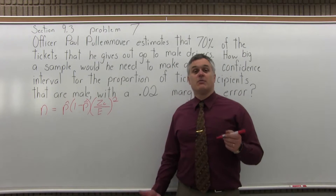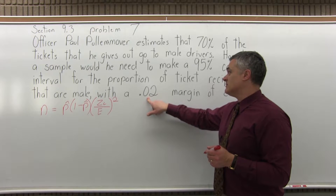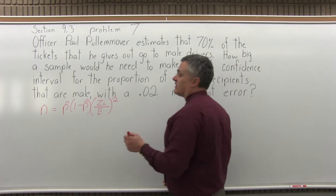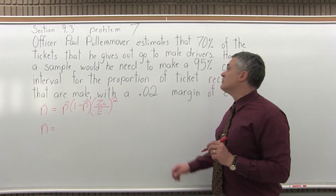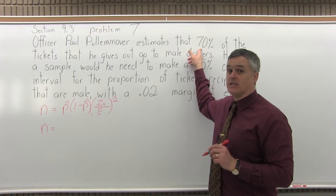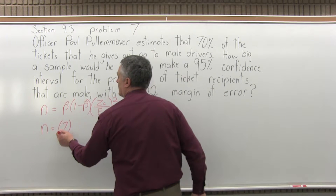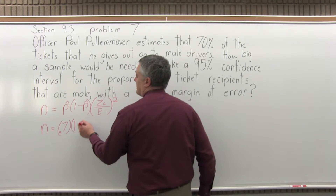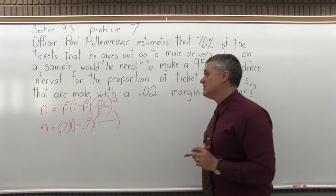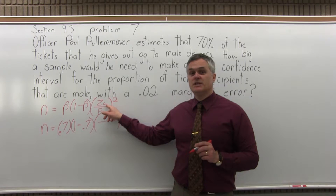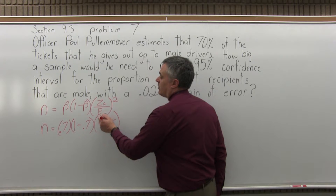That's the formula for n — for how big a sample we need for a confidence interval with that .02 margin of error at 95% confidence. So let's start filling it in. N is what we're looking for. p-hat, the estimate for the population proportion, is 70%, which would be entered as .7. So let's call it .7 times 1 minus p-hat, which would be 1 minus .7. z sub c is the confidence coefficient, and for a 95% level of confidence, the confidence coefficient is 1.96.